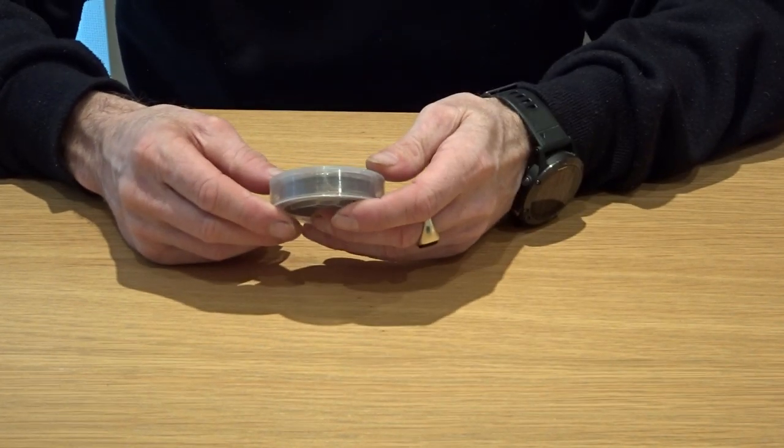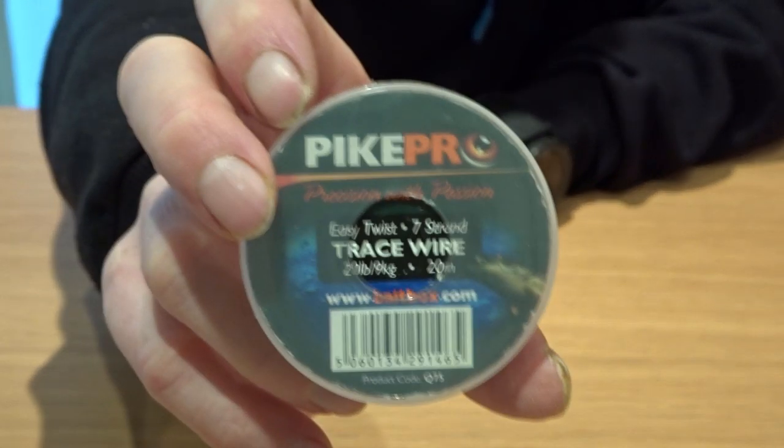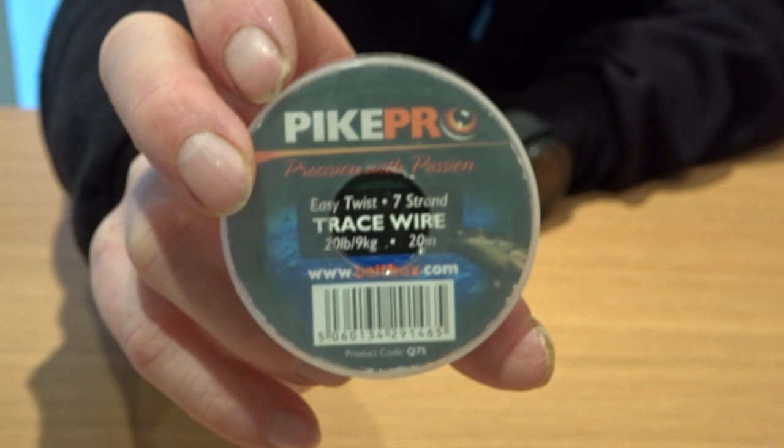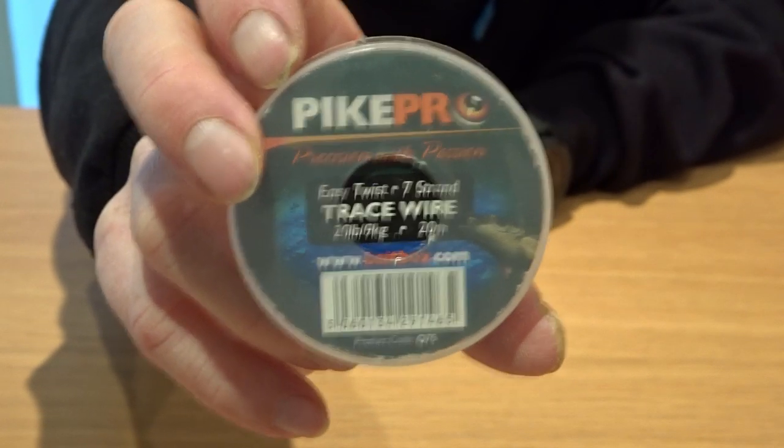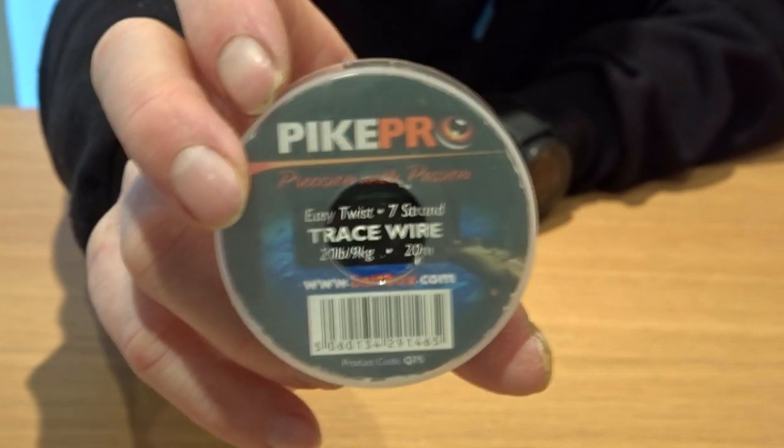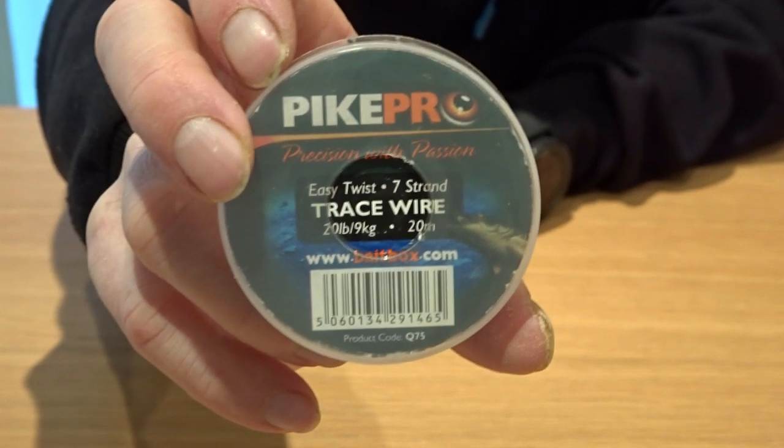You'll need some trace wire. The wire I'm using at the moment is Pike Pro. It's a nice supple wire. This version is in 20lb, I've also got some 30lb. I don't think it matters. I mean personally I just go with the 30lb nowadays. It doesn't seem to make any difference in takes.